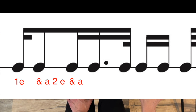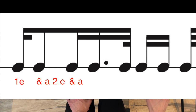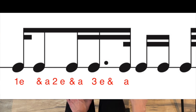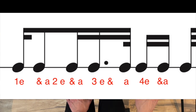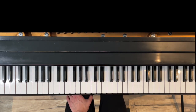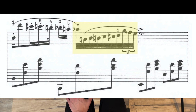The dotted 16th followed by the 32nd: the dot means you add an extra half to whatever the note was, so a dotted 16th equals three subdivisions, followed by one for the 32nd. So that whole first chunk in the measure is: one-e-and-a, two-e-and-a, three-e-and-a. Then an easier group — four-e-and-a — where each note gets two subdivisions. Then look at the 32nd notes: this time there are only ten of them.